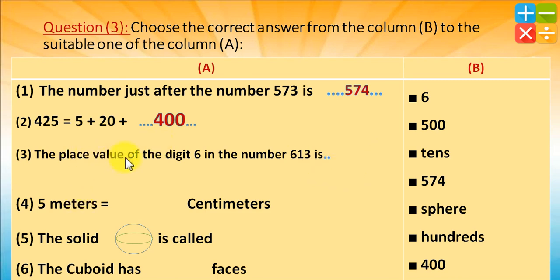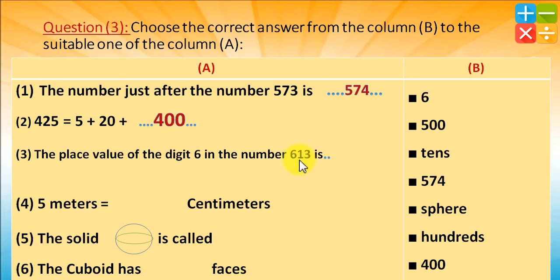The place value of the digit 6 in the number 613 — pay attention, the place value, not just the value — is 100. We have 3 in units, 1 in tens, and 6 in hundreds, so the place value of 6 is 100.